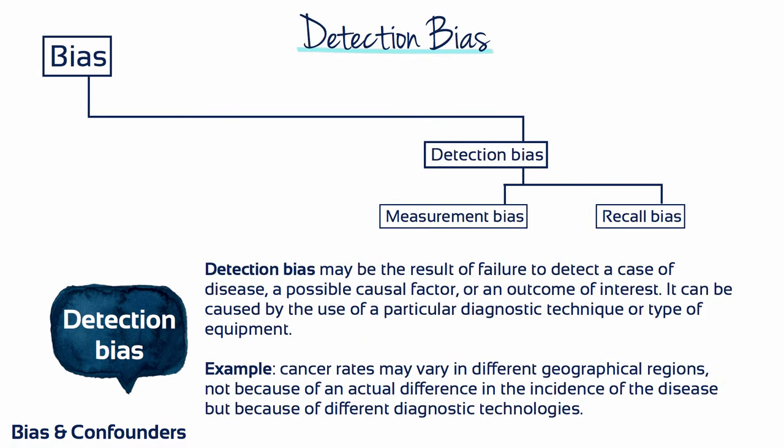Detection bias is the result of failure to detect a case of disease, a possible causal factor, or an outcome of interest. It can be caused by the use of a particular diagnostic technique or type of equipment. For example, cancer rates may vary in different geographical regions, not because of an actual difference in the incidence of the disease, but because of different diagnostic technologies.